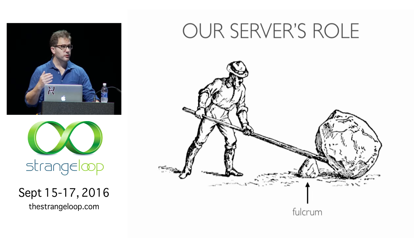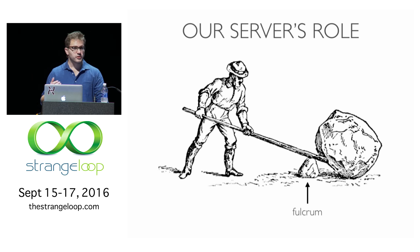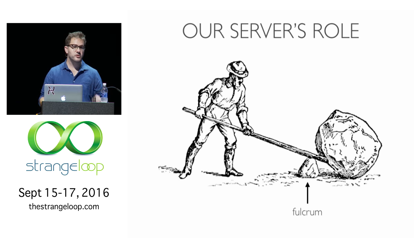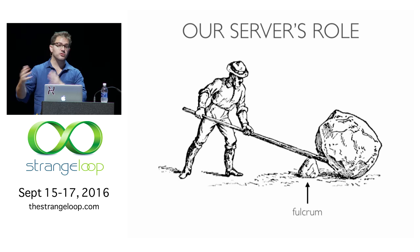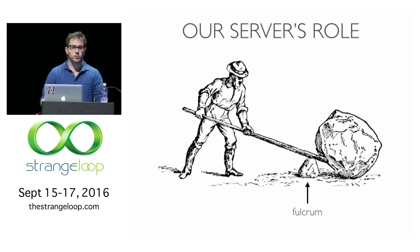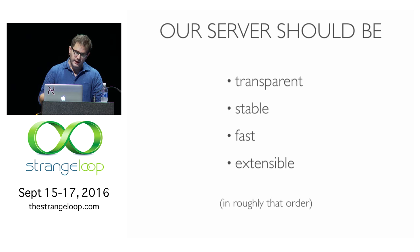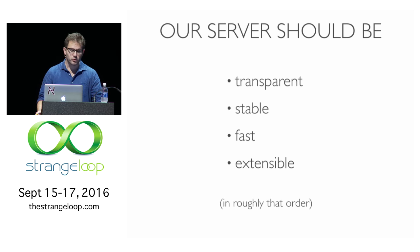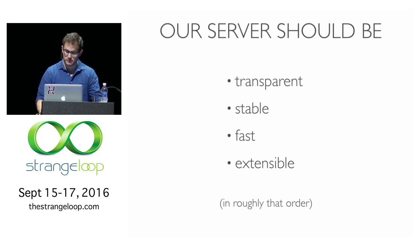The way to think about the server — a very small, focused piece of code — is that it's a fulcrum. It is positioned very advantageously with respect to the rest of our code in a way that can affect great change. When building the server, we really want to have four properties, in order of importance: transparent, stable, fast, and extensible.